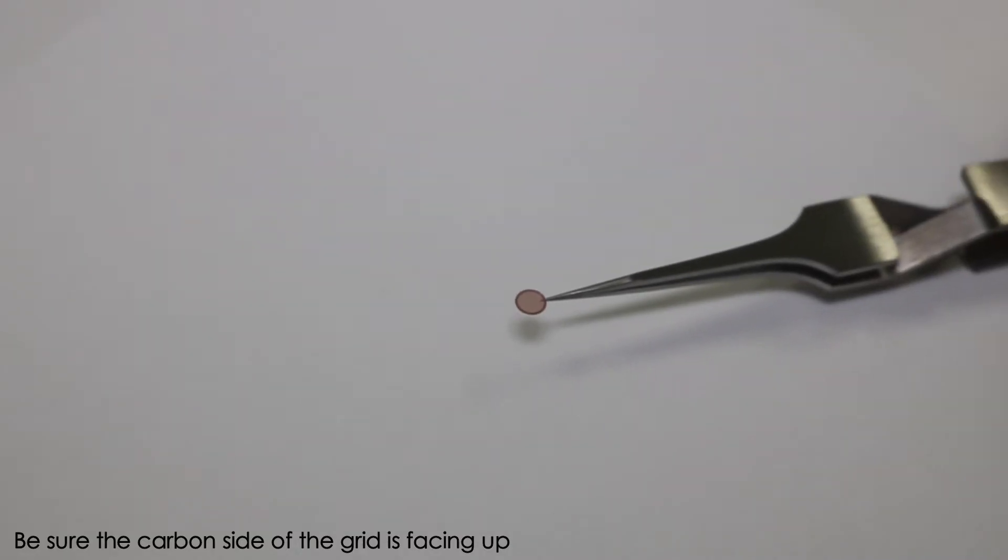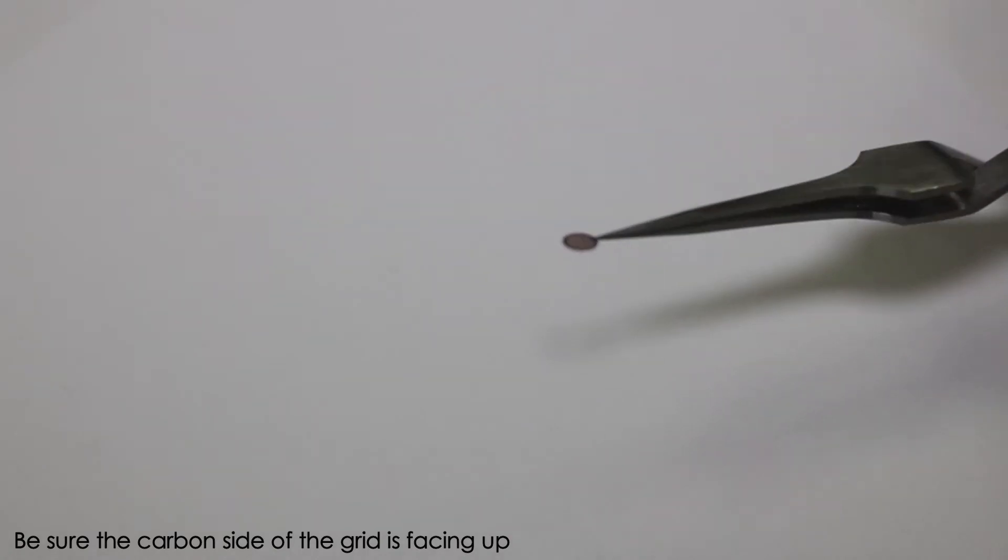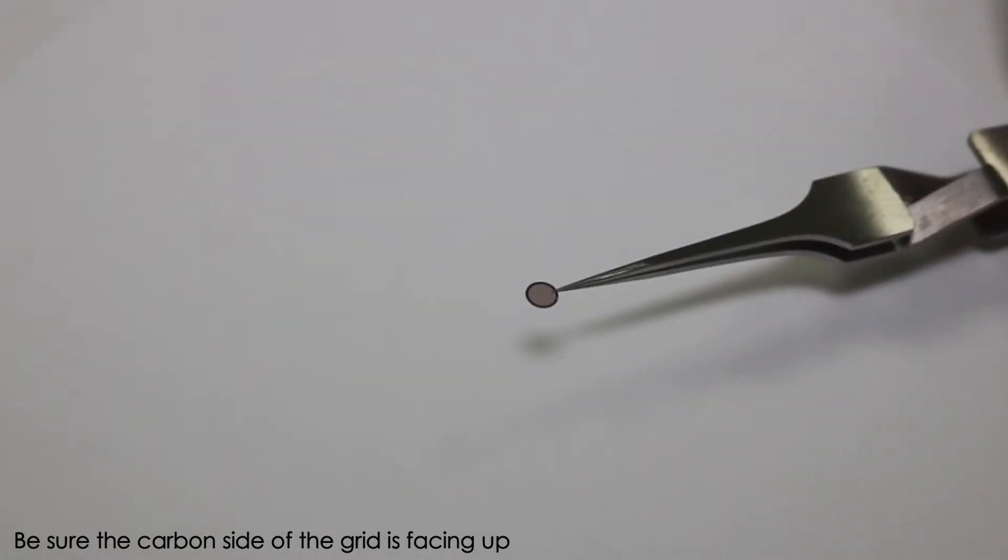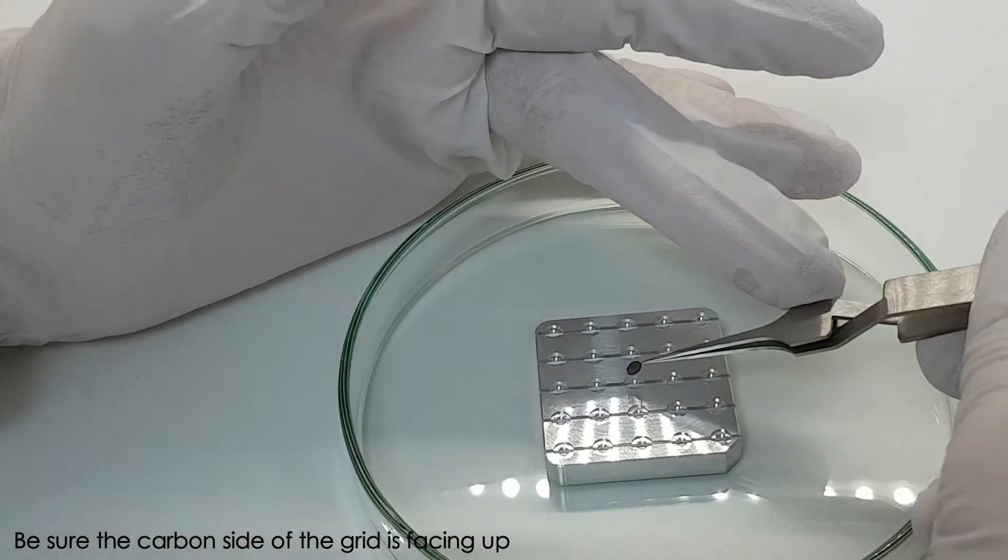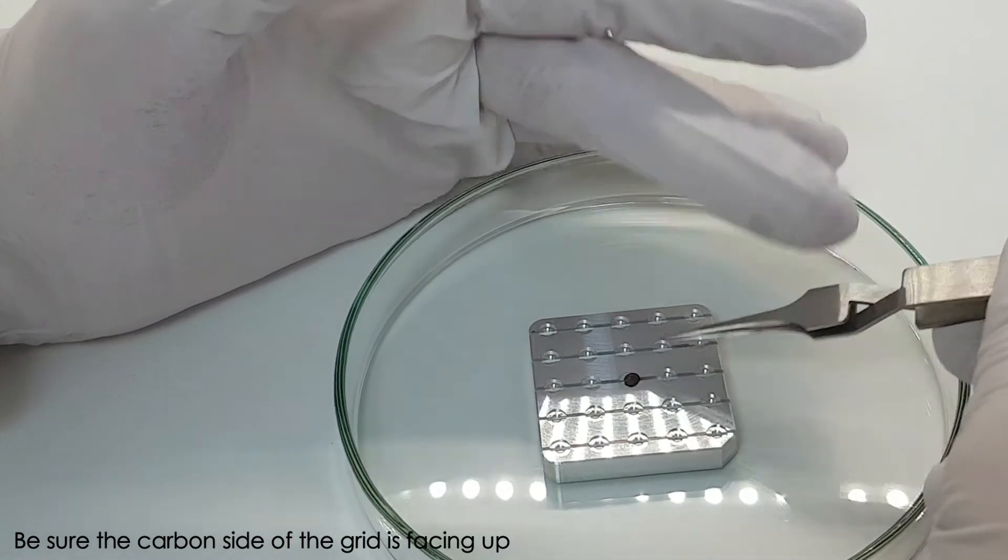Standard grids have two different sides, the copper side and the darker carbon support where the sample is placed. Be sure the carbon side of the grid is facing up.